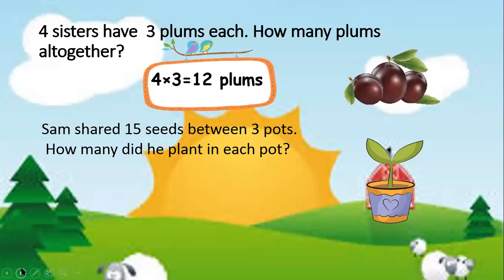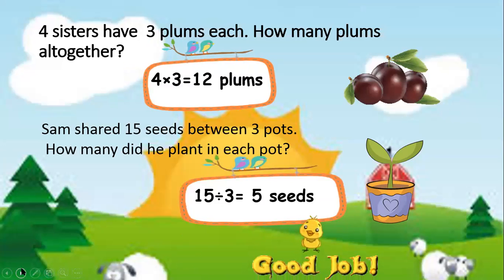Sam shared 15 seeds between 3 pots. How many did he plant in each pot? This is sharing. So you have to do division. 15 divided by 3 is 5. So the answer is 5 seeds.